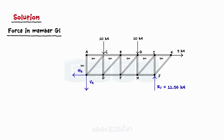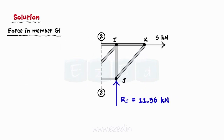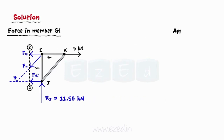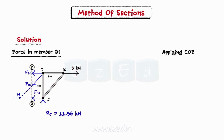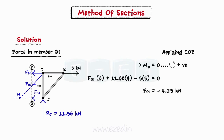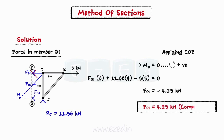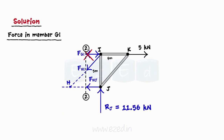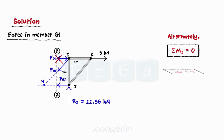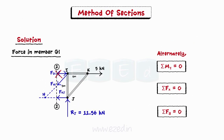Next, we find the force in member GI. We will cut the truss about section 2-2 as shown in the free body diagram. We draw the FBD of the right-hand side part and apply conditions of equilibrium to this isolated part. We equate the summation of moments of all forces about point H to zero, since two unknown member forces meet at point H. On simplifying, we find the force in member GI as 4.25 kN, compressive in nature. We could also solve this part by taking moment about point I first, which would give us the value of force in member HJ, and then equate summation of forces in both x and y directions to zero to find force in member GI.